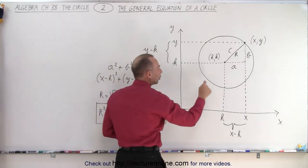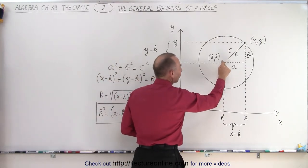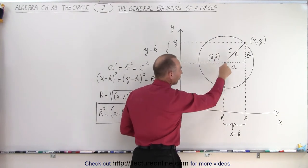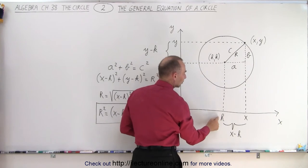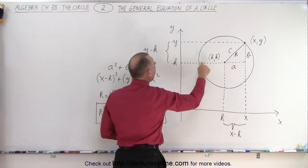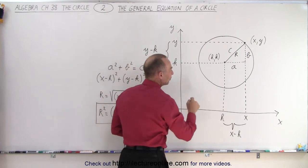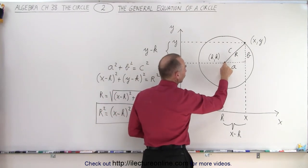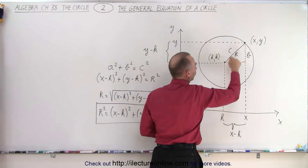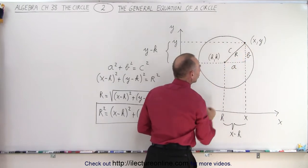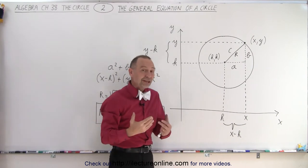Then we can call the point at the center having coordinates h and k. So the x value, or the x coordinate of the center, has x equals h, and the y coordinate of the center has y equals k. Then if we draw a line between the center of the circle and any arbitrary point on the circle, the distance from the center to that point, well, let's call it radius, the radius of the circle.